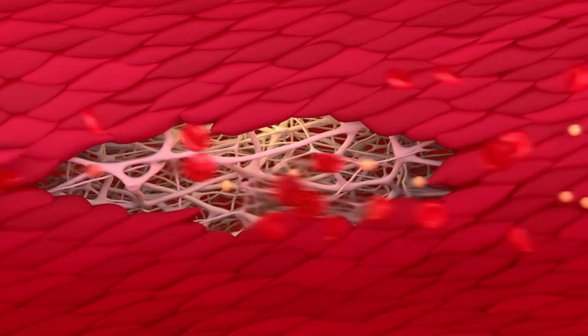Atherosclerotic plaque formation begins with a small injury to the endothelium, often caused by hypertension, high cholesterol, high blood sugar, or smoking.